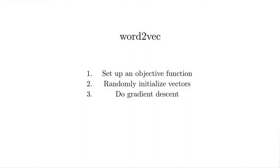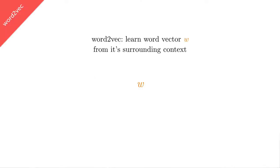The way we're going to work with Word2Vec is we're going to set up some objective function, randomly initialize all the parameters, and then just do gradient descent — similar to how most machine learning algorithms go. I'm going to try to do this without ever mentioning neural networks. I'm a physicist by training. I think we can actually do this without having to invoke these giant architectures — we can talk about it much, much more simply. So let's talk about training.